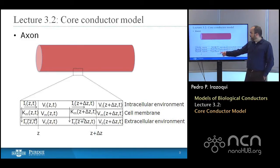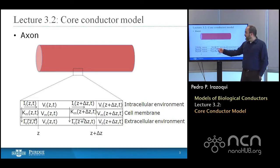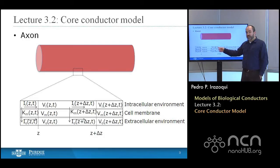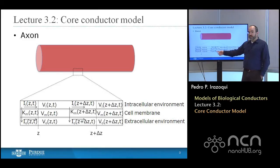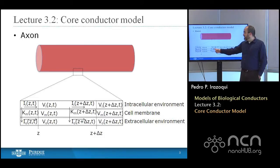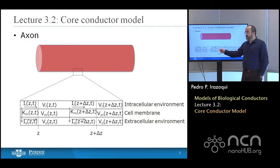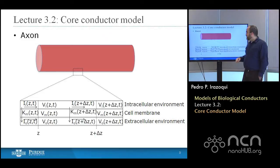If you move an infinitesimal segment delta Z down along the axis of the neuron, you'll have the current inside the cell as a function of Z plus delta Z and T, still flowing axially on the inside. You have the current I sub O as a function of Z plus delta Z and T, flowing axially outside the neuron. The transmembrane current per unit length K sub M, as a function of Z plus delta Z and T, flows perpendicularly through the membrane from inside to outside.